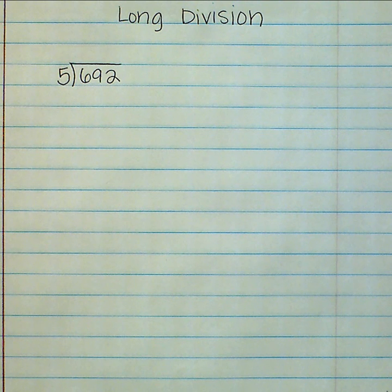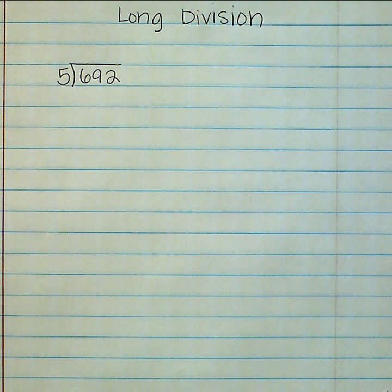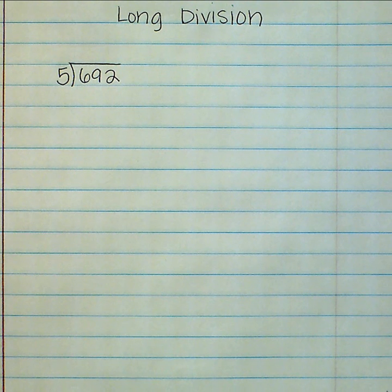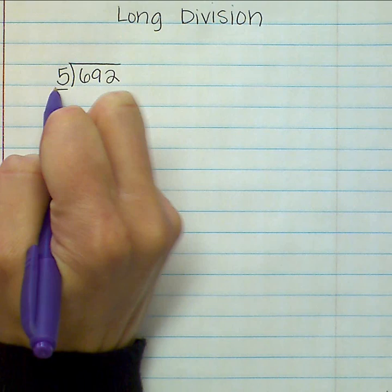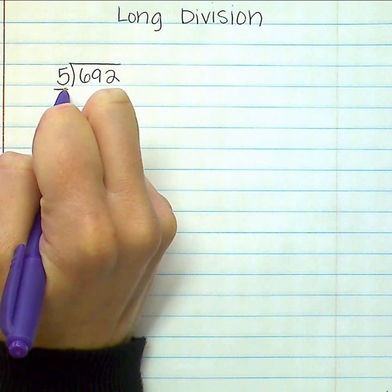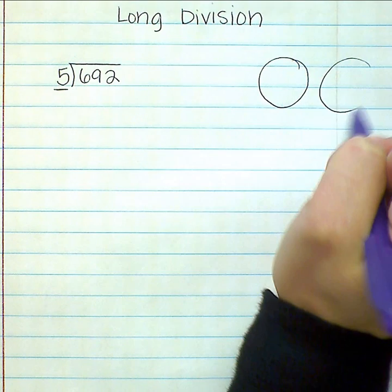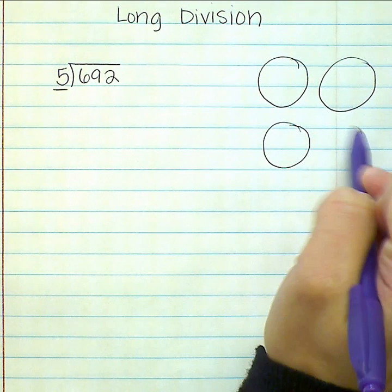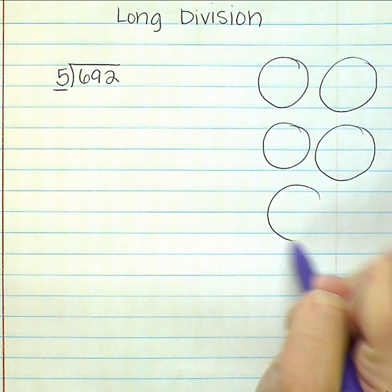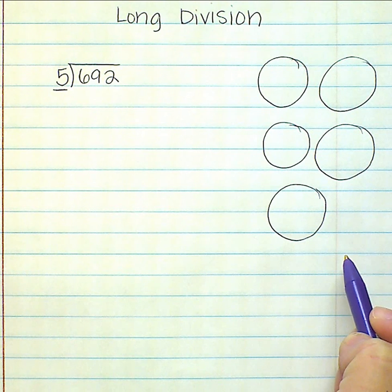The first thing we need to do is figure out how many groups we need. This number gives us how many groups we need, so we're going to draw our five groups over here. Each circle represents one group.